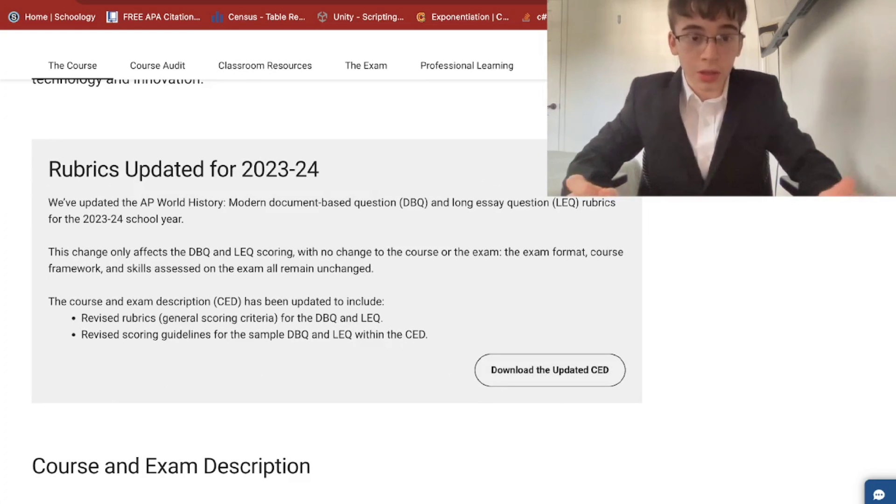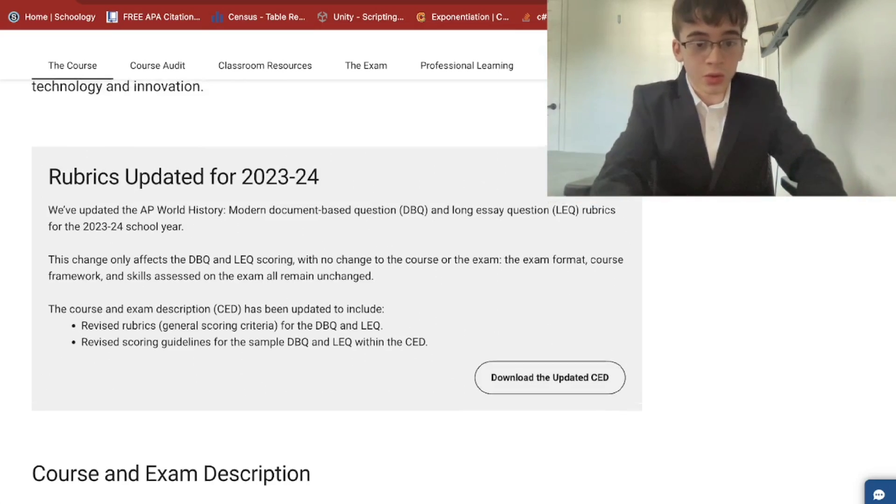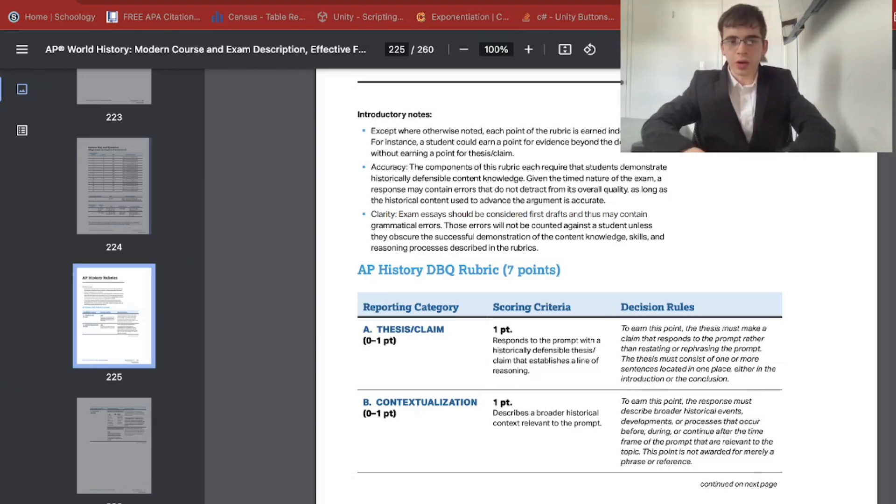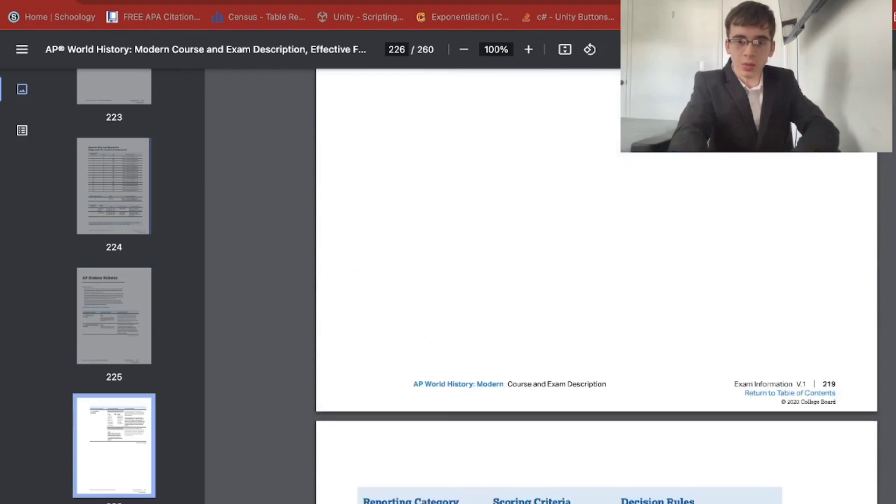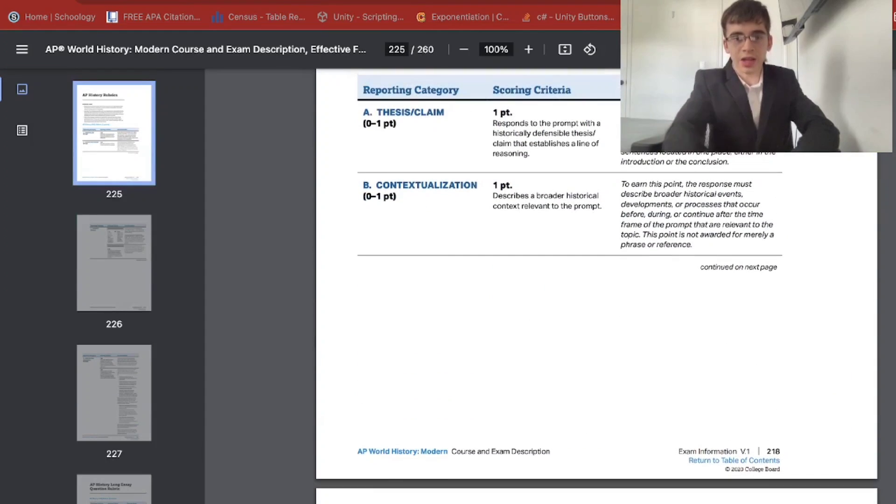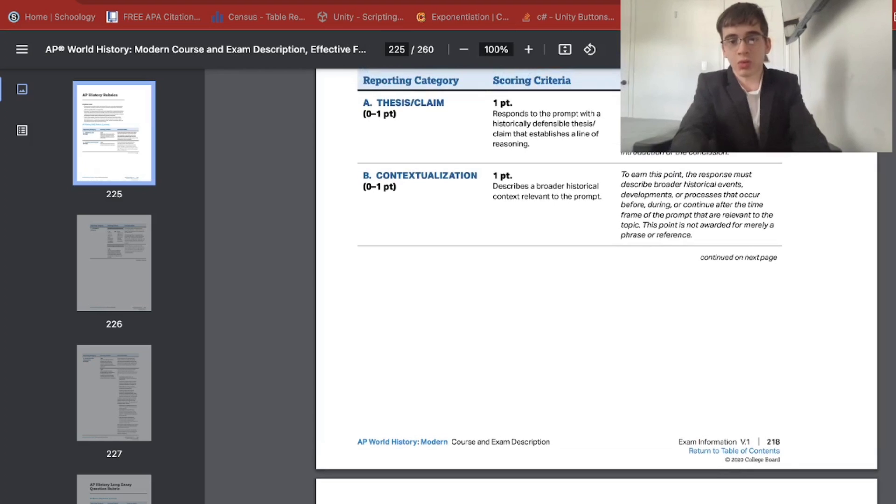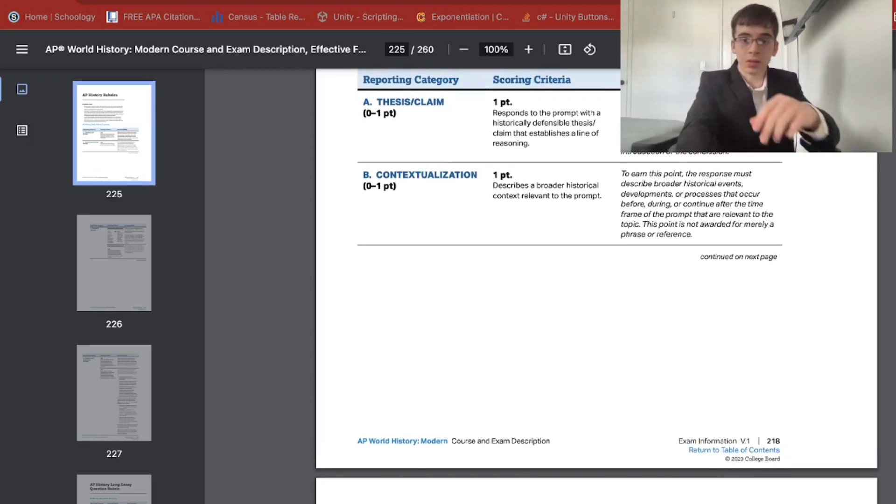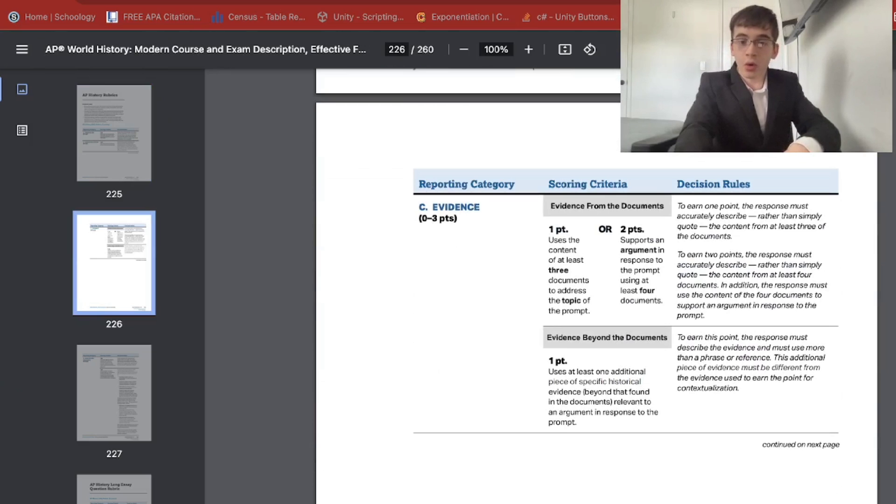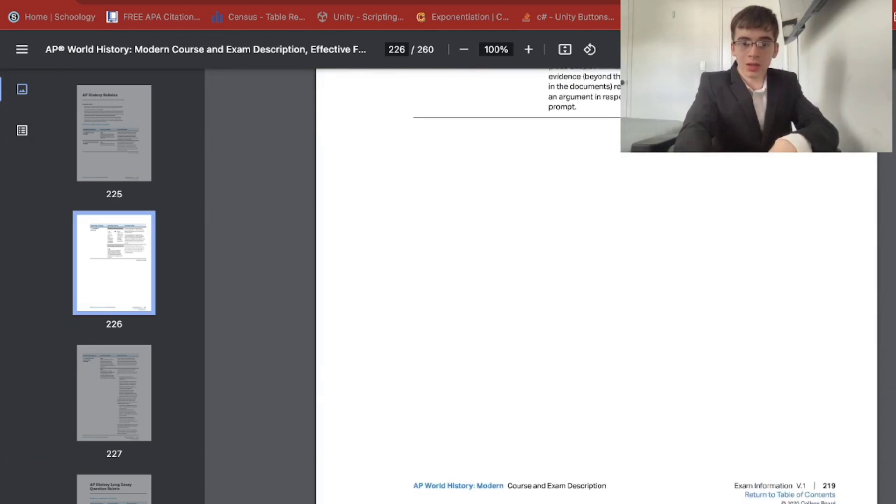They've specifically updated the DBQ and LEQ to make it much easier for this current year, and it should be much easier to score points. So the AP world history as well as US history rubrics have been modified. The DBQ is still seven points, and the LEQ is six points. The thesis and claim point remain one point. However, evidence-wise, for DBQ, you now need to use at least four, not six documents to score the two points. One point still remains three documents, and evidence beyond the document is the same.